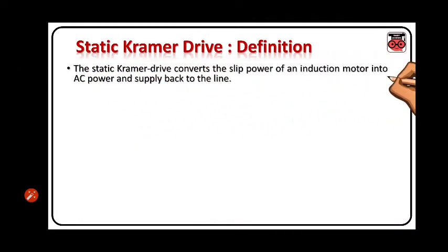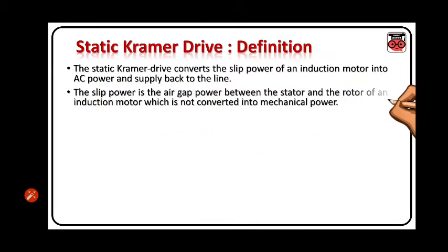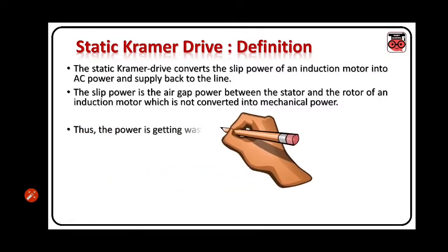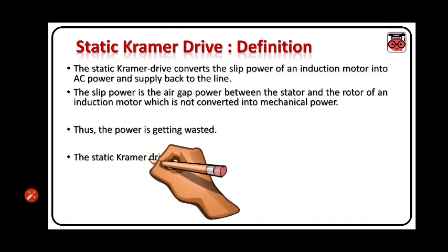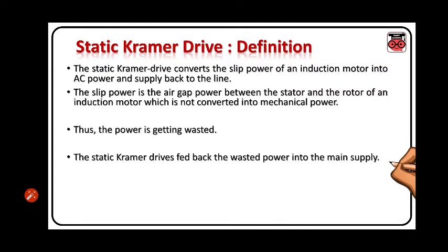The static Kramer drive converts the slip power of an induction motor into AC power and supplies it back to the line. The slip power is the air gap power between the stator and the rotor of an induction motor which is not converted into mechanical power. As the power is getting wasted, the static Kramer drive feeds the wasted power back into the main supply.